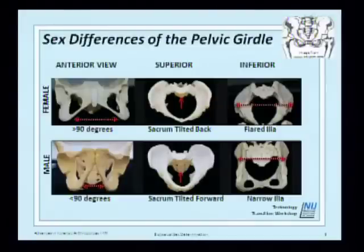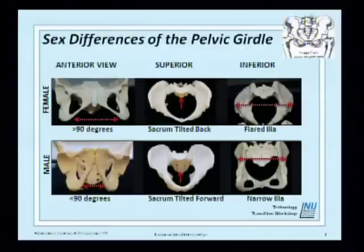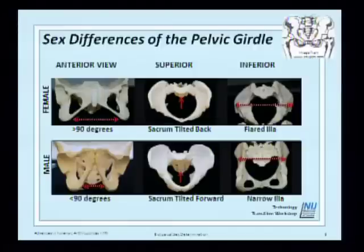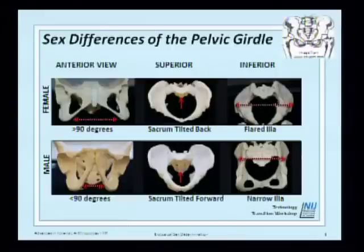I'll go over the sex differences of the pelvis first. Here I have a photograph of the anterior, superior, and inferior views of the male and female pelvis. The first photo on the left indicates the sub-pubic angle — for females it's much wider than for males. The center pictures show the position of the sacrum, which is tilted back in females, giving the pelvic inlet a lot more space. The picture on the right shows the ilia: males are more narrow and taller, while females are wider, shorter, and broader.